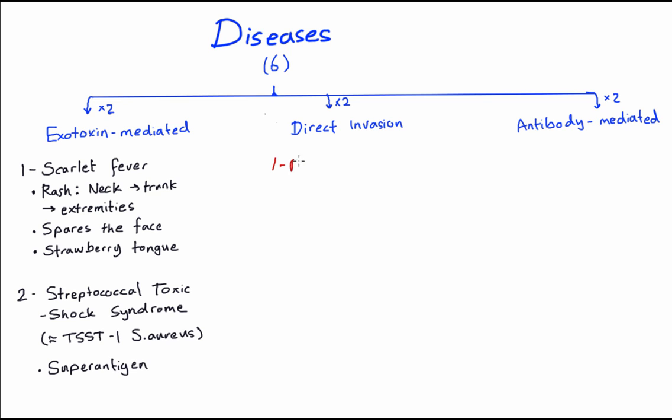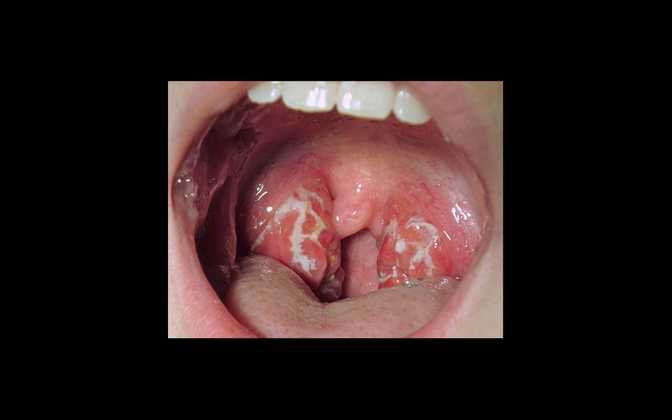The direct invasion diseases: the first disease caused by direct invasion is pharyngitis, commonly known as strep pharyngitis. This usually presents with tonsillar exudate. In this case, you need to suspect group A strep pharyngitis because it can be complicated by rheumatic fever or post-strep glomerulonephritis (PSGN). This is a picture of strep pharyngitis and you can clearly see the tonsillar exudate.